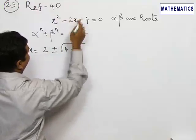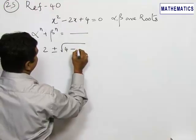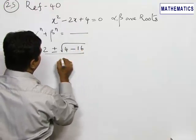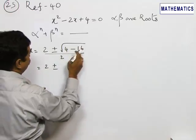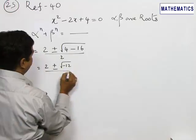4 minus 4 into 4, that is 4ac will be 16, whole divided by 2a. That is 2 plus or minus, this will be root of -12 by 2.